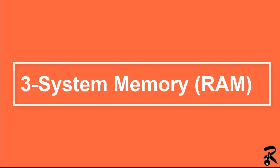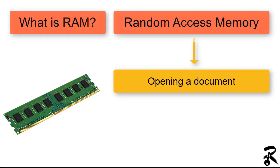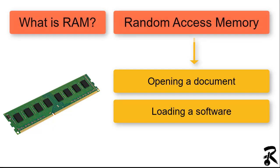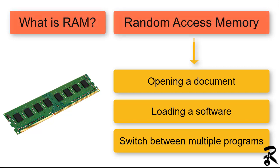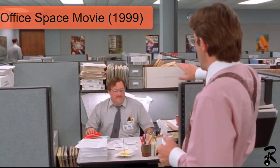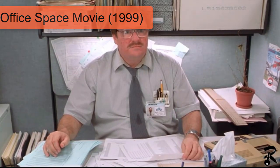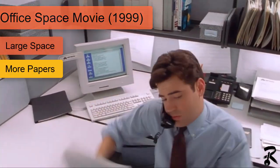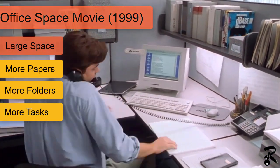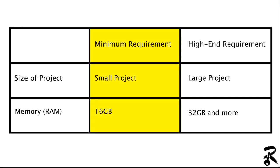Let's move to the third factor: system memory or RAM — Random Access Memory. It is where data is stored and accessed by the CPU. When you run software, open a document, or do almost anything, RAM is used to store the data while the computer is working on it. Think of it like the comedy movie Office Space from 1999, where the boss keeps making the co-worker's desk smaller and smaller until they can't work anymore. Memory is like your desk — the larger it is, the more papers, folders, and tasks you can handle at once.